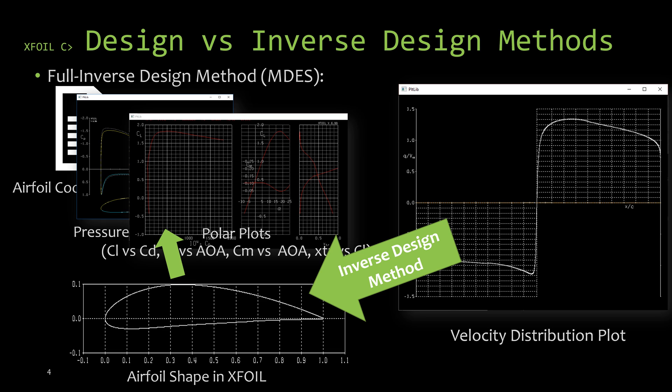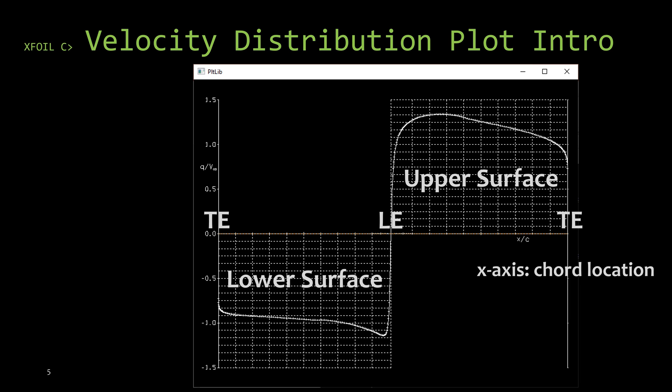Once we have this airfoil shape, we can do whatever we need to do with it — whether that's exporting the coordinate files for CAD software, looking at the pressure distribution for different angles of attack, or examining the polar plots for our new airfoil shape. The X axis of the velocity distribution plot is the chord location corresponding to the surface velocity plotted on the Y axis.